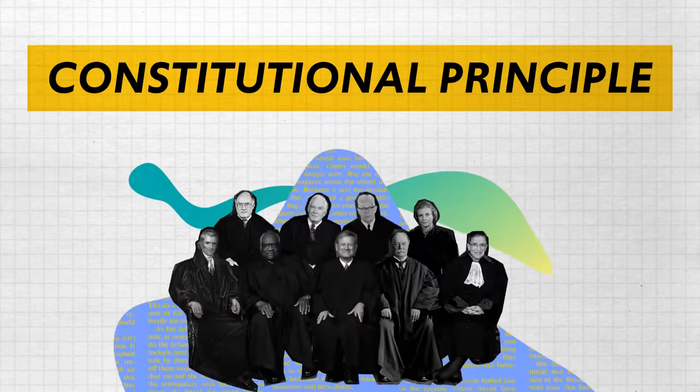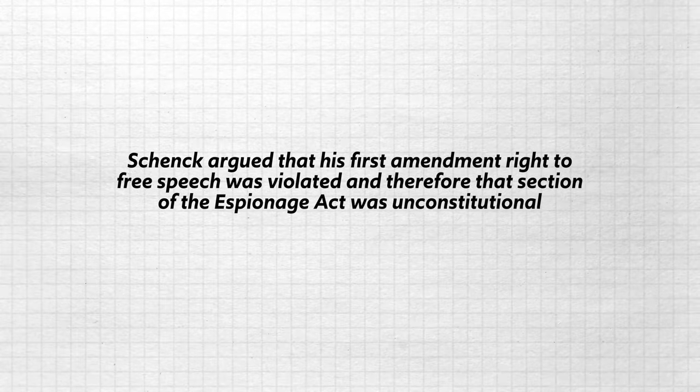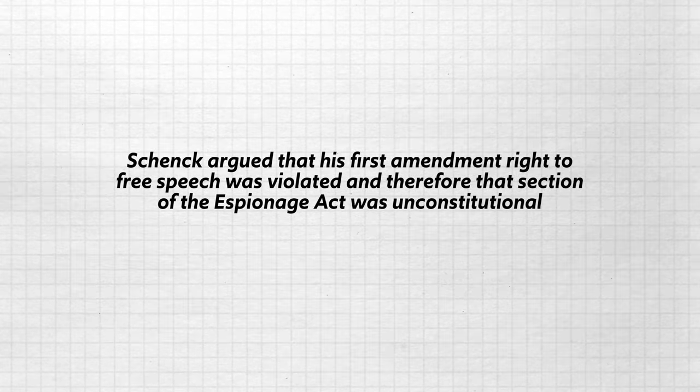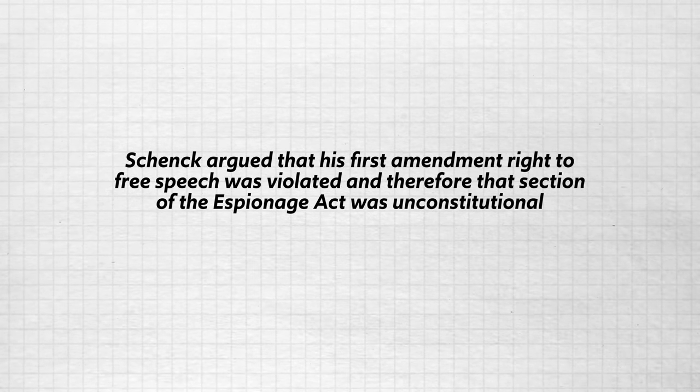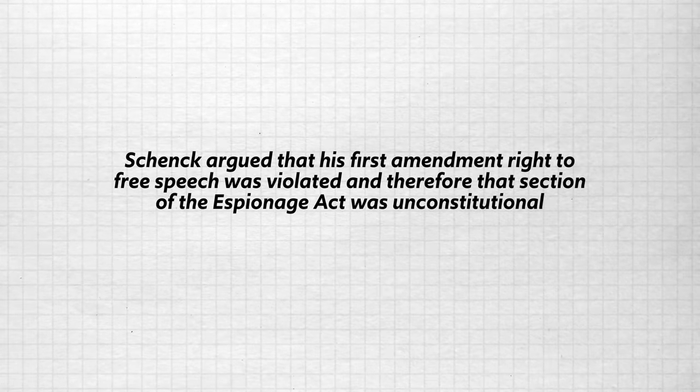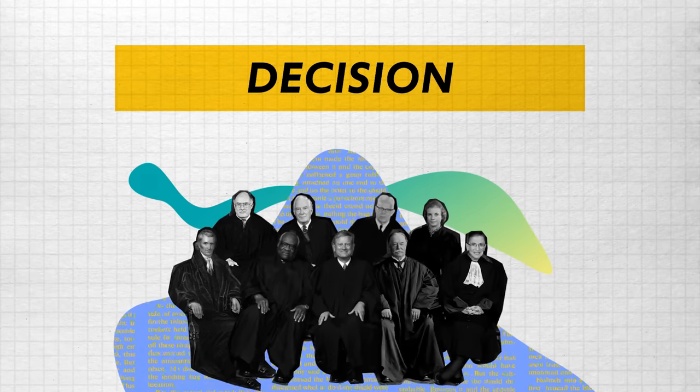So what was the constitutional principle at stake in this case? Well, it was clear that Schenck had violated the Espionage Act, but he argued back that his First Amendment right to free speech was violated and therefore that section of the Espionage Act was unconstitutional. In Schenck's mind, he had every right to protest the war, and if the government silenced his dissent, it would be a tyrannical government overreach. So was he right? Let's look at the decision the Court handed down.